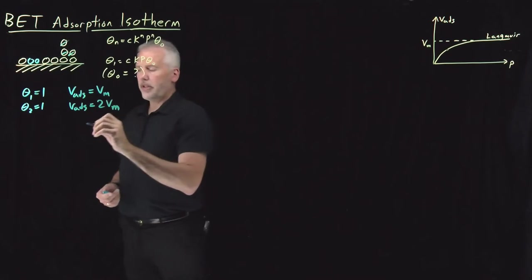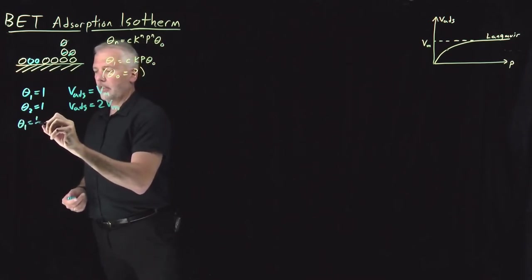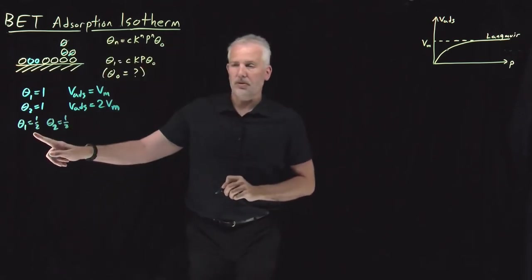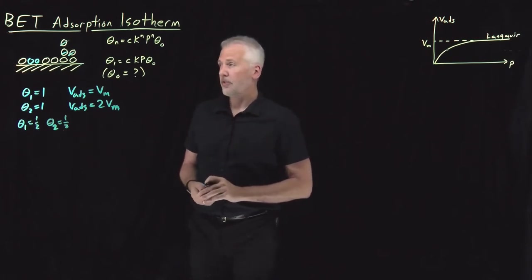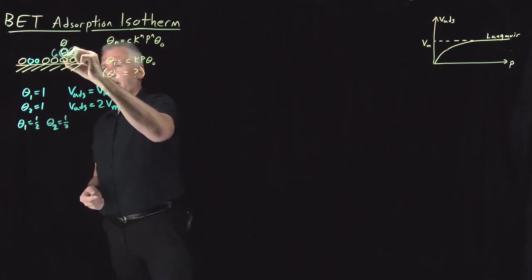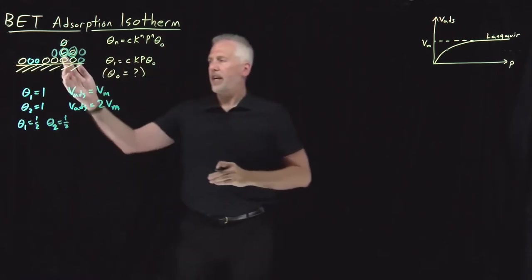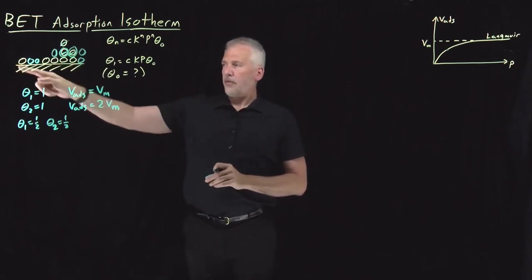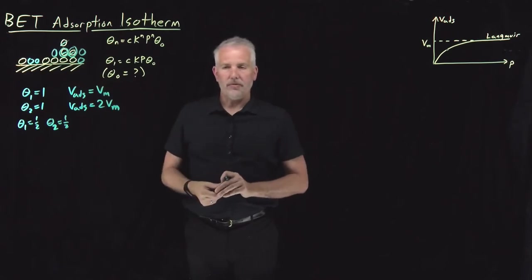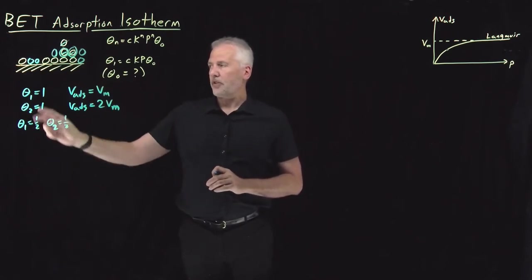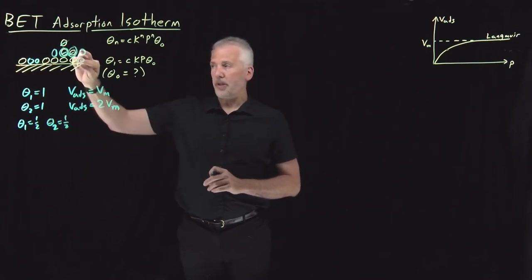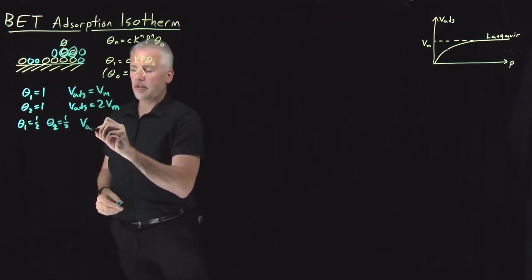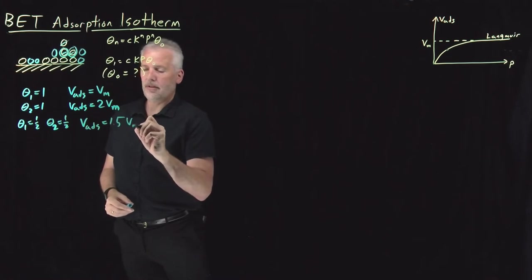Let's do a slightly trickier case. What if half of the surface is covered with one molecule and half of the surface is covered with two molecules? From the picture, you can see that it's one and a half monolayers worth of surface. Half the surface covered by one molecule plus half the surface covered by two molecules gives half times one plus half times two, which adds up to one and a half monolayers worth of coverage.